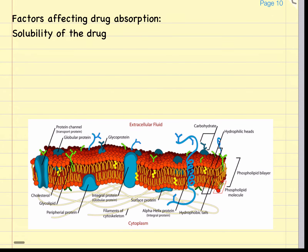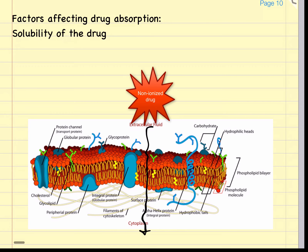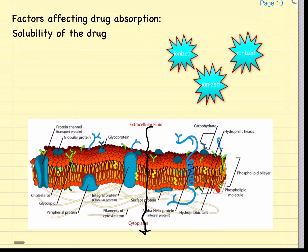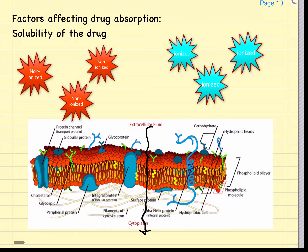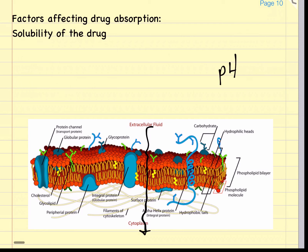Let's look at some factors that affect drug absorption through a cell membrane. The first is the solubility of the drug. Many drugs can pass through a cell membrane only if they are in the unionized or non-ionized form — meaning they have no charge, either positive or negative. The problem is that most drugs are present in the body in both the ionized and non-ionized form. The pH of the drug and the pH of the body will determine the degree to which a drug becomes ionized and thus is either able to be absorbed or not.